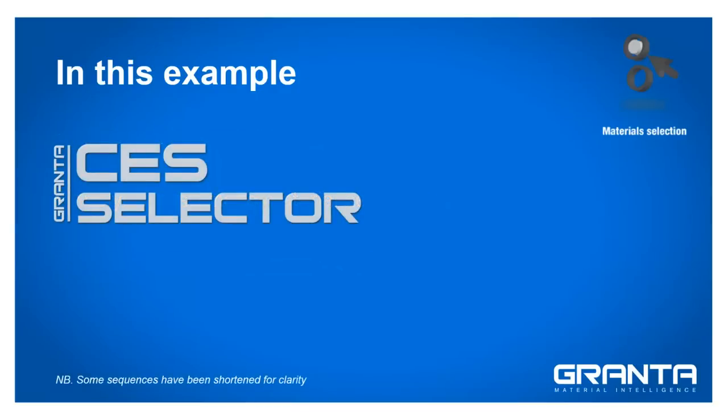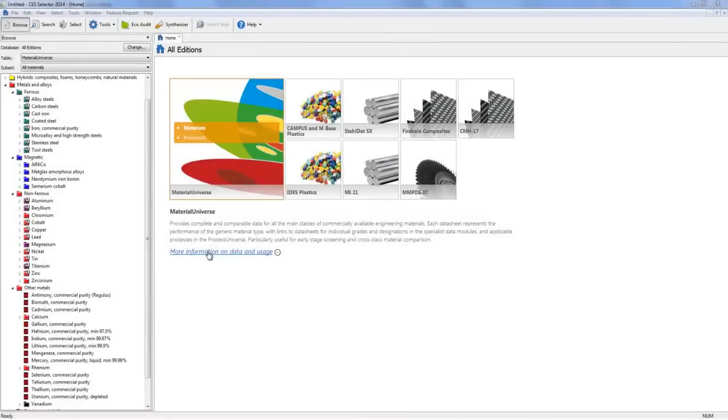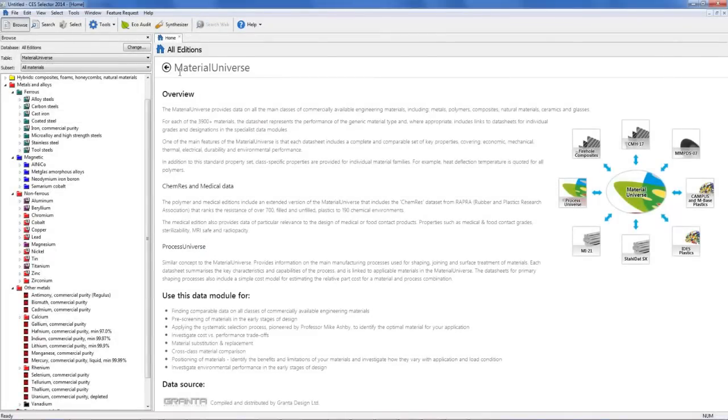Using Granta's unique material universe dataset, which includes complete and comparable data for all classes of engineering materials, we start by looking at weight.